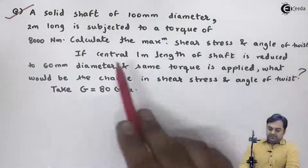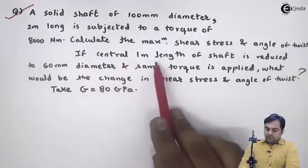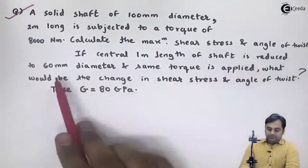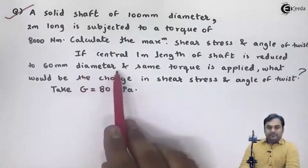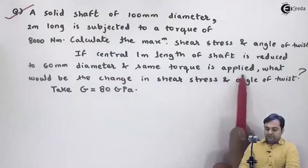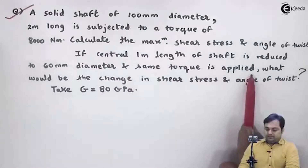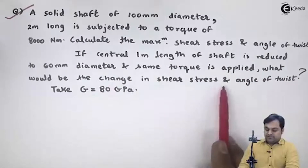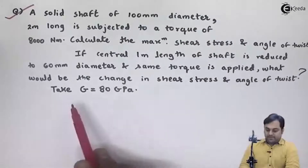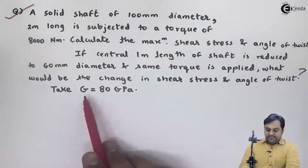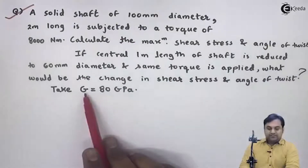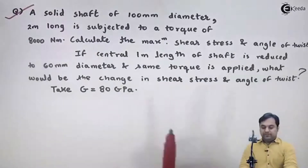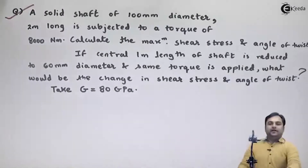Next, if the central 1 meter length of the shaft is reduced to 60 mm diameter and the same torque is applied, what would be the change in shear stress and angle of twist? Take modulus of rigidity G equal to 80 GPa. This is the question we have.